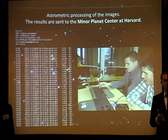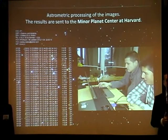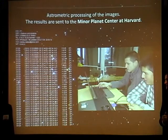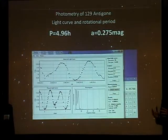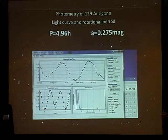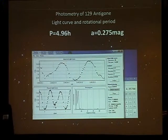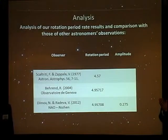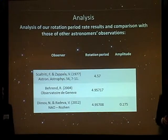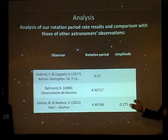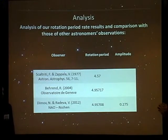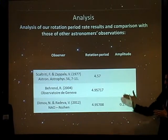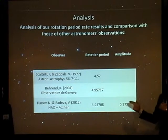The results of our observations were sent to the Minor Planet Center at Harvard. Our goal was to make photometry of the asteroid and to calculate its rotation period. We did it with the Perseus software, and our calculation of the rotation period is 4.96 hours. We worked really precisely, and our results, as you can see, are really close to those of the professional astronomers.